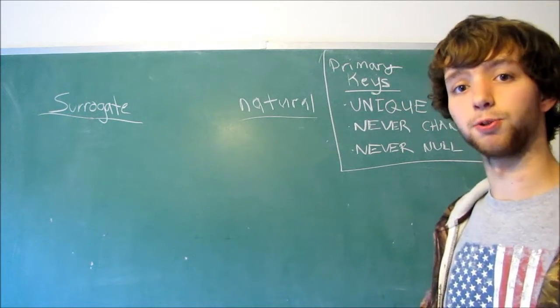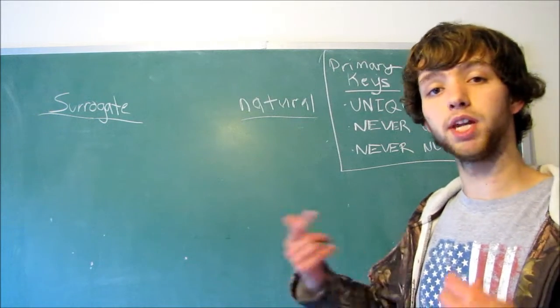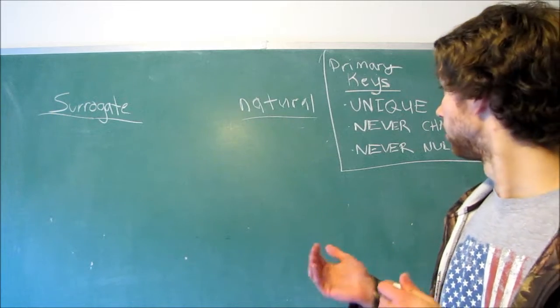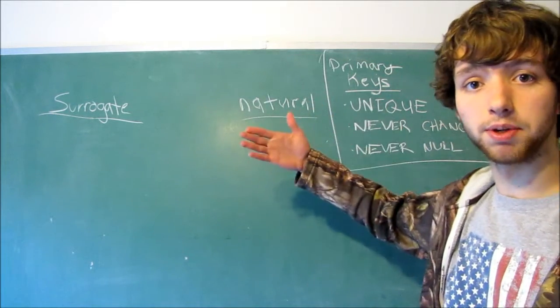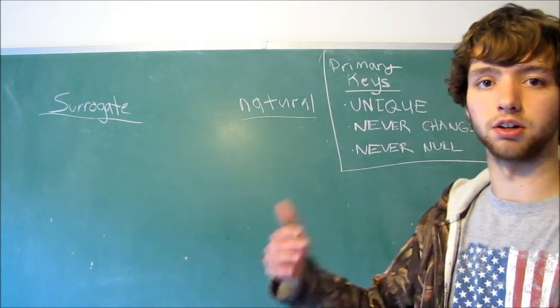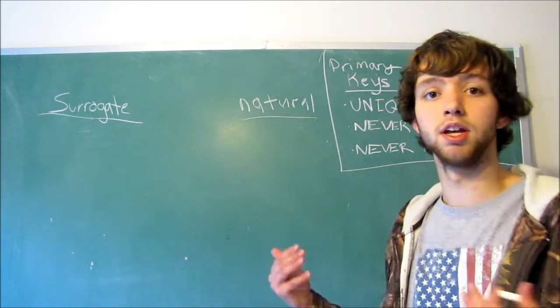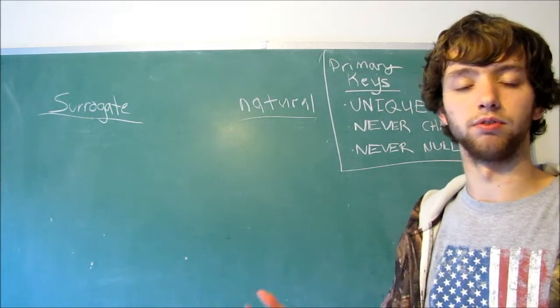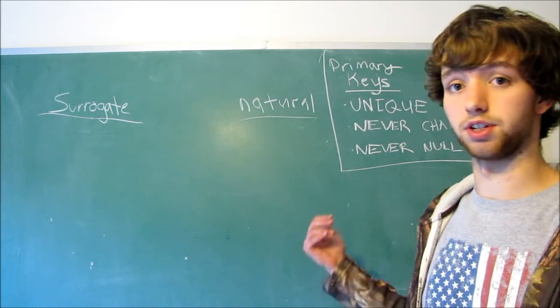The other thing is, natural keys have real-world values, real-world meaning, right? So you have connections to real-world meaning. So for example, in the comments, the actual comment, in combination with the user who posted it, in combination with the time it was posted, and the page it was posted on, or any of those four columns to be used as a natural key. Well, those have real-world meaning,